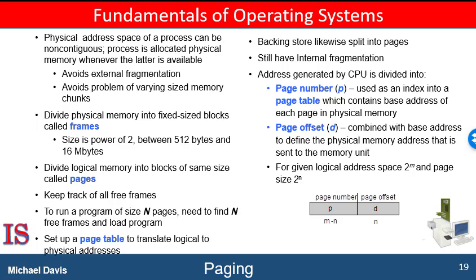As the job is running, the CPU generates an address of the instruction within a frame that is needed now. Every address generated by the CPU is divided into two parts: a page number, represented by P, and a page offset, D, as shown here. That is the address of the instruction that is to be executed now.